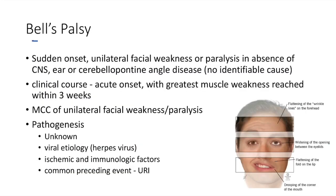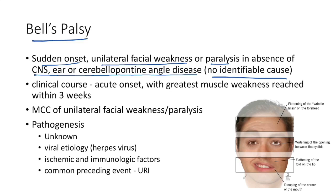Bell's palsy is sudden onset unilateral facial weakness or paralysis in the absence of CNS, ear, or cerebellopontine angle diseases — there is no identifiable cause. It is acute in onset with greatest muscle weakness reached within three weeks. Bell's palsy is the most common cause of unilateral facial weakness.